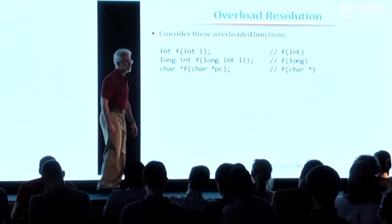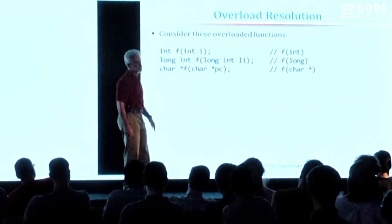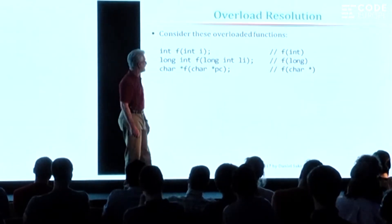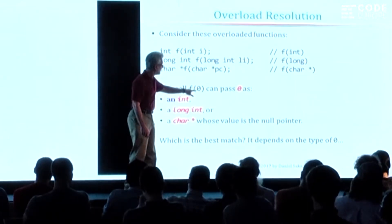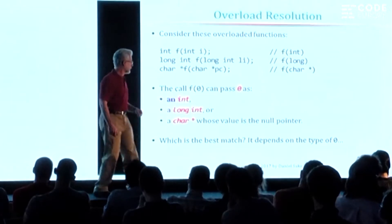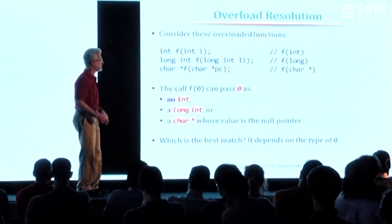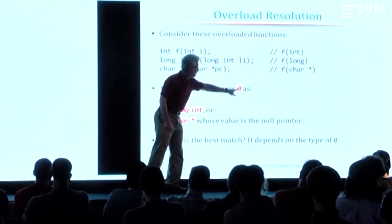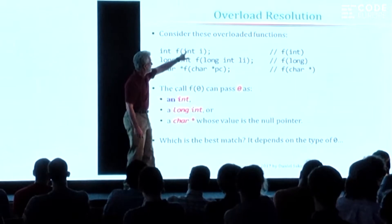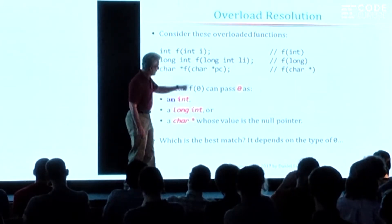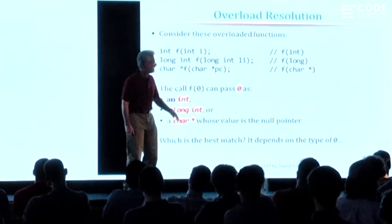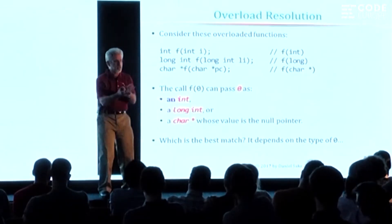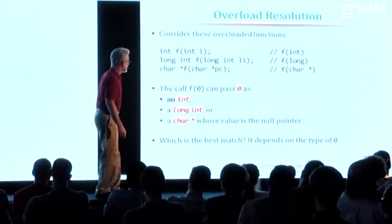Overload resolution involves doing a type match between the arguments in the call and the types of the parameters in the function declaration. I have three functions all named F: the first takes an int, the second a long int, and the third a pointer to a character. I want to call a function f passing 0. The compiler will first ask: can I pass that 0 as an int? Can I pass it as a long int? Can I pass it as a pointer to a character? And if for any of these the answer is no, that function is removed from consideration.